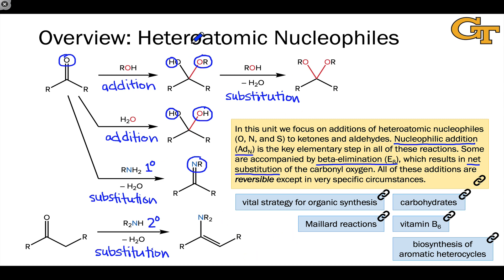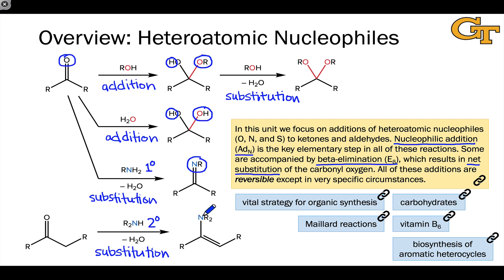All of these reactions involving heteroatomic nucleophiles engaging with a carbonyl compound — ketone or aldehyde specifically — have very important applications. For example, the formation of acetals is a vital strategy in organic synthesis for protecting a carbonyl group from further nucleophilic addition. We find hemiacetals in carbohydrates, and hemiacetals, imines, and enamines in Maillard reactions involved in cooking. Vitamin B6 is an important cofactor that involves a heteroatomic nucleophile engaging with a carbonyl group. And in the biosynthesis of aromatic heterocycles, setting up an imine or enamine is a precursor to ring formation. This is just the tip of the iceberg — nucleophilic additions are really a key class of reactions for ketones and aldehydes.